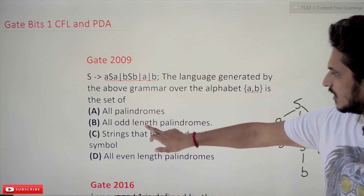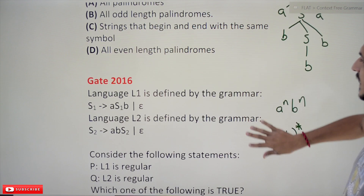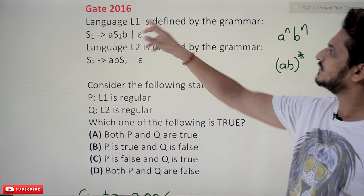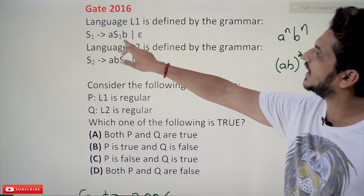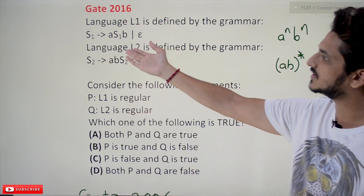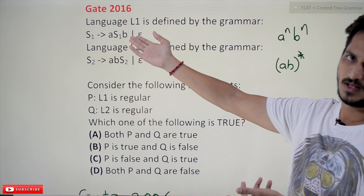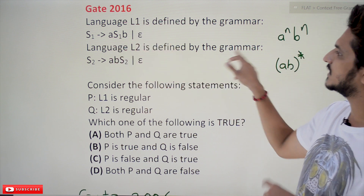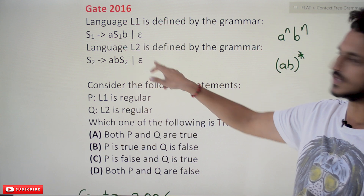That is option B. Coming to the next one, Gate 2016. Language L1 is defined by the grammar S1 → aS1b | ε. We have explained many times — this language is aⁿbⁿ, so this is a context-free language. Language L2 is defined by the grammar S2 → abS2 | ε.